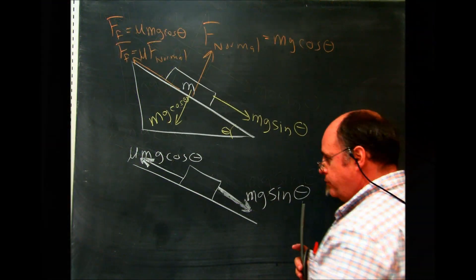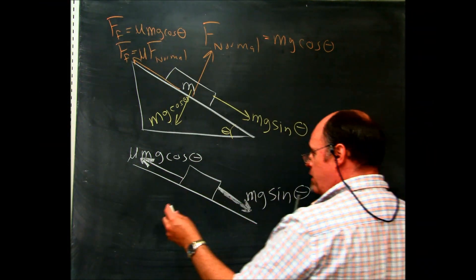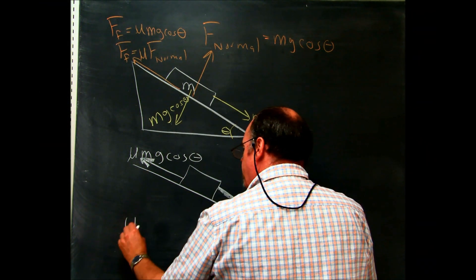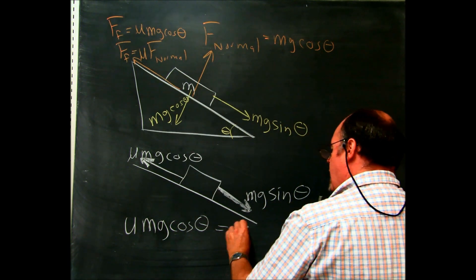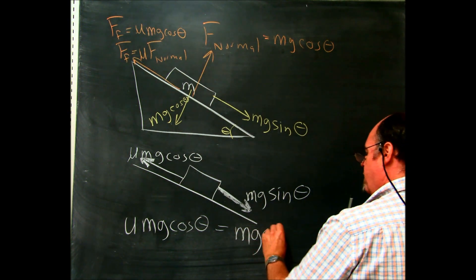So when it didn't break free, this side was equal to this side. So we had mu mg cosine of the angle equals mg sine of the angle.